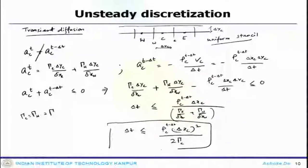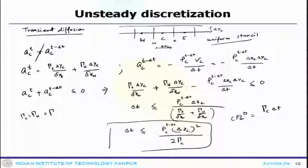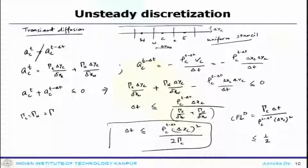That is the restriction you get for the transient diffusion problem. The CFL criteria for the diffusion problem is gamma_C times delta t divided by rho_C times delta x_C squared, and it must be less than one-half for stability. Individually, the convection and diffusion problems have different stability limits, and when you combine them, you get the complete unsteady convection-diffusion system, which we take up next.